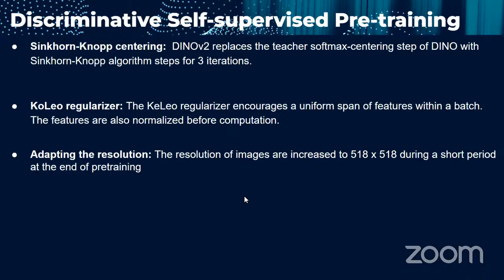They use a Sinkhorn-Knopp centering step which replaces the teacher softmax centering step of DINOv1 with steps for three iterations. They also use a Koleo regularizer which encourages a uniform span of features within the patch, and features are normalized before computation. Lastly, the resolution of images is increased to 518×518 during a short period at the end of pre-training.